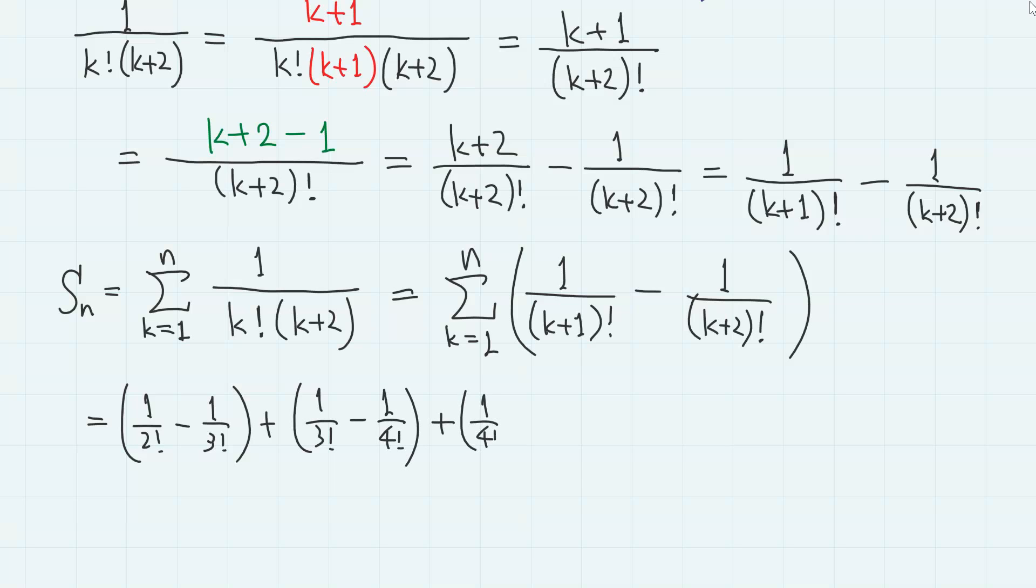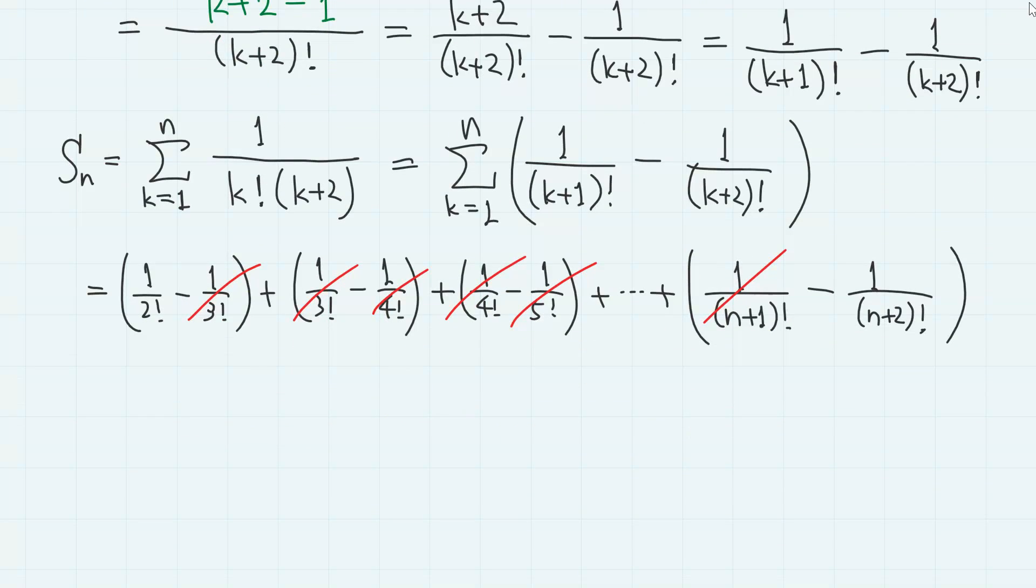Plus 1 over 4 factorial minus 1 over 5 factorial. And so on. And in the last part, we have 1 over n plus 1 factorial minus 1 over n plus 2 factorial. And as you can see, the terms cancel out, and we have 1 over 2 factorial minus 1 over n plus 2 factorial.